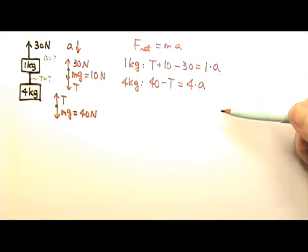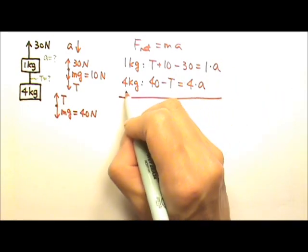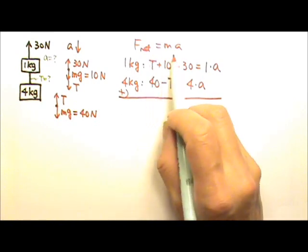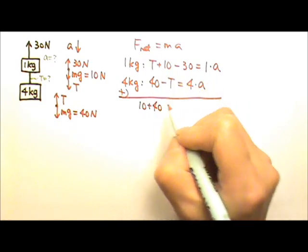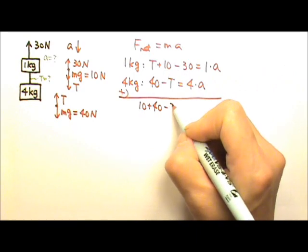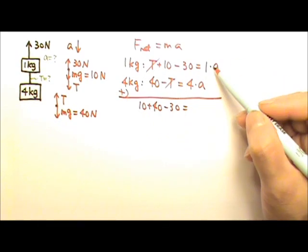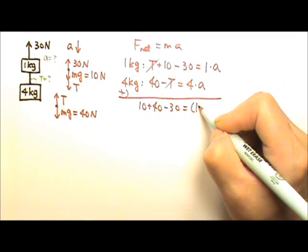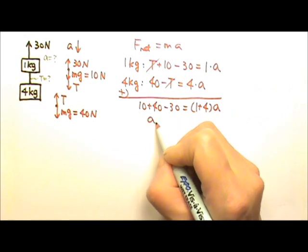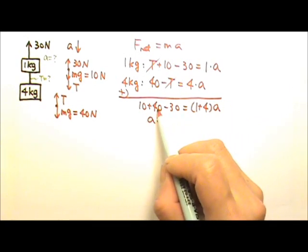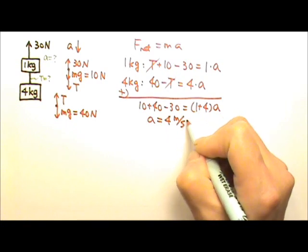You can solve for the two unknowns any way you want, but a convenient method is to stack the two equations and add them. Adding gives 10 plus 40 minus 30, and T minus T cancels. Then 1a plus 4a gives 5a. So 50 minus 30 equals 5a, meaning 20 equals 5a. The acceleration is 4 meters per second squared.